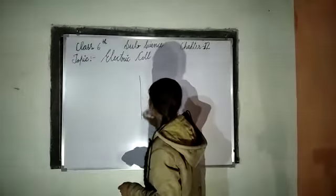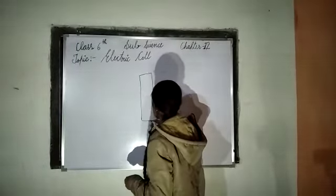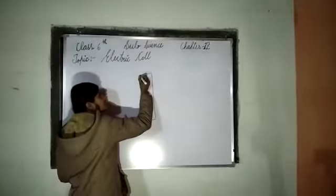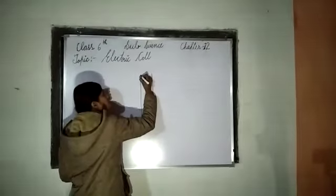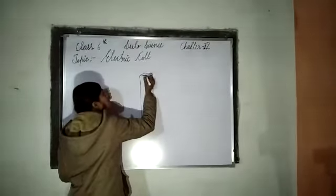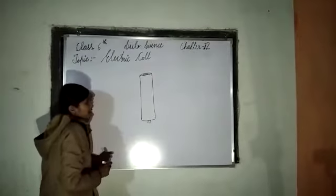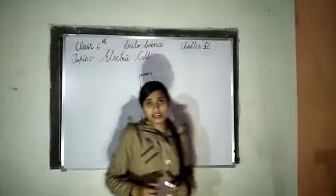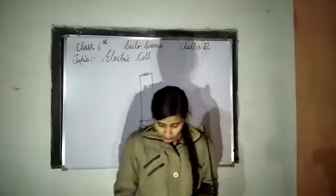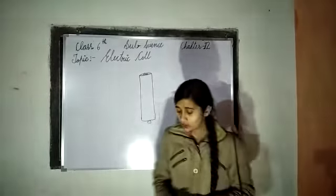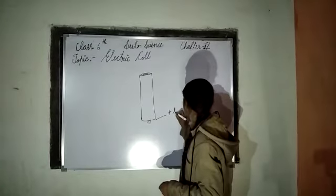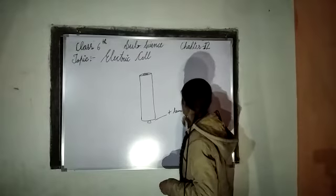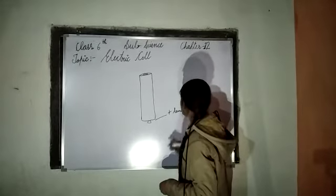Now let's look at the physical structure of the electric cell. This end is flat. Where the metal is a cap, that is the positive terminal.